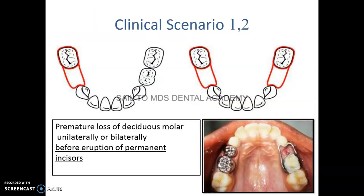Now for clinical scenarios: before the eruption of upper or lower incisors, the ideal space maintainer is the band and loop. After the eruption of lower incisors, the space maintainer of choice is the lingual arch.